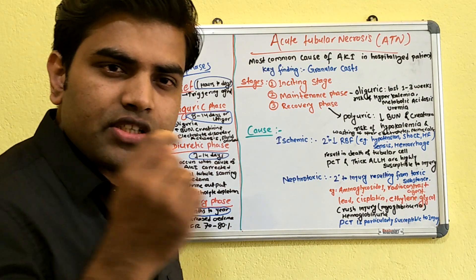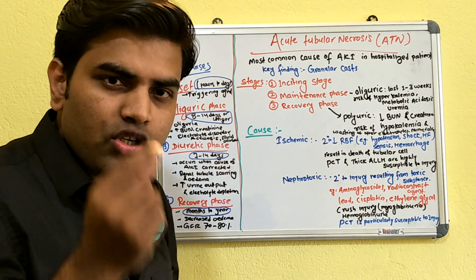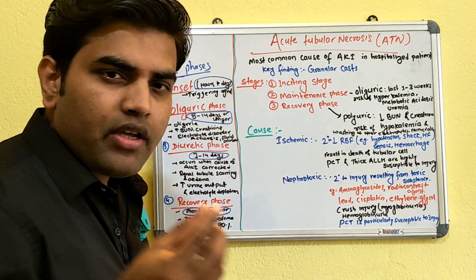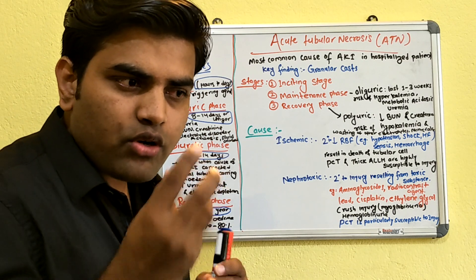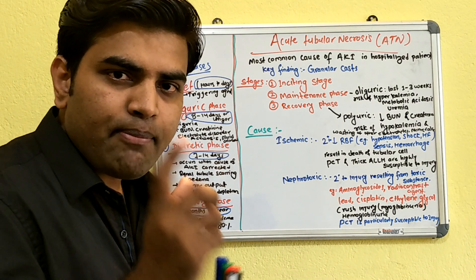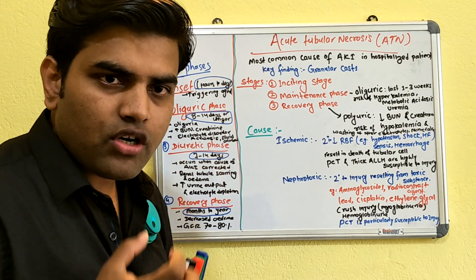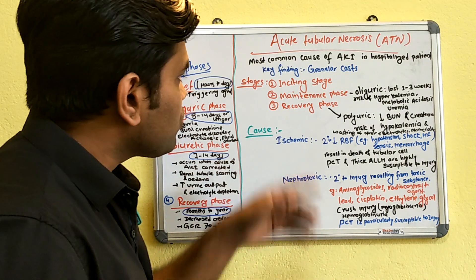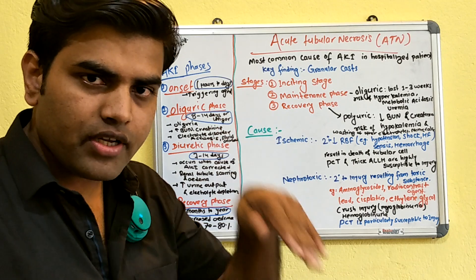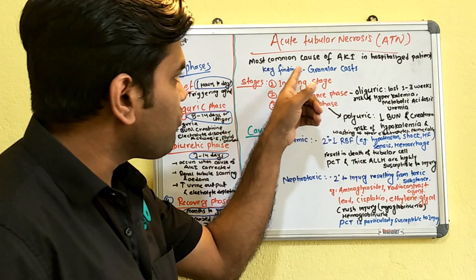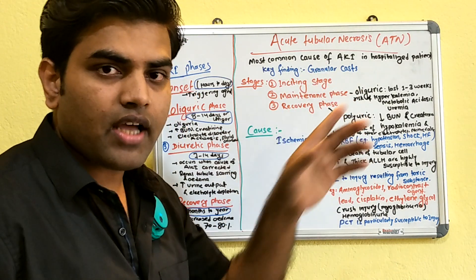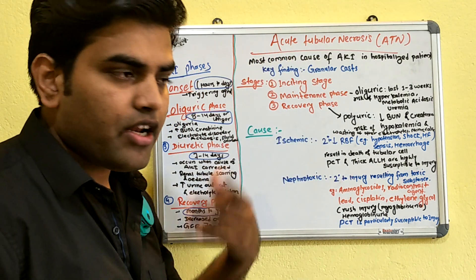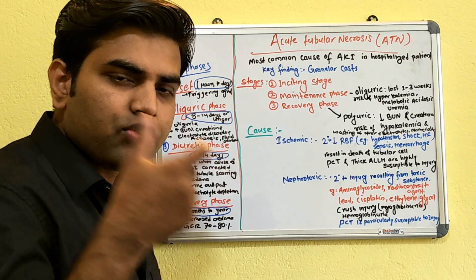What will be the features? Since there is damage in the renal tubule, there will be necrosis of the tubule. Since that part is not working, it gets sloughed out. This sloughed material goes into the tubule and forms granular casts. Granular casts are a key finding of acute tubular necrosis.